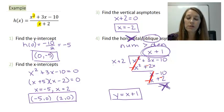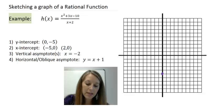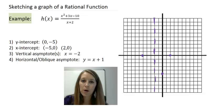So I put these four details on my graph, and I see where that leads me. Plotting my details here, I have a y-intercept at negative 5. I have an x-intercept at negative 5. And at positive 2. I have a vertical asymptote at negative 2.